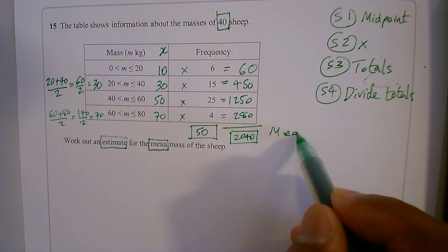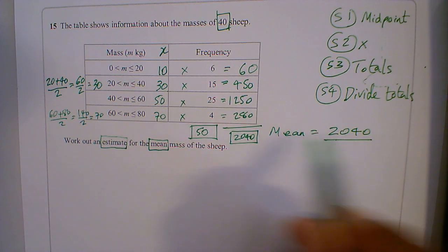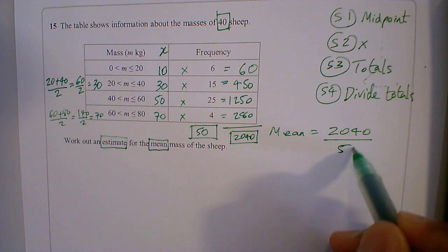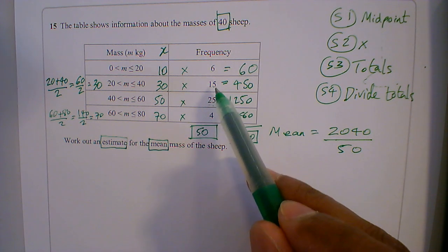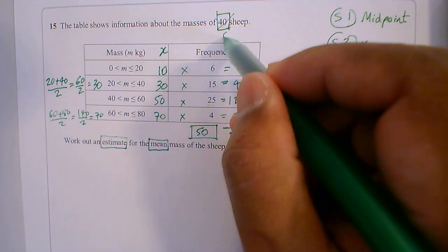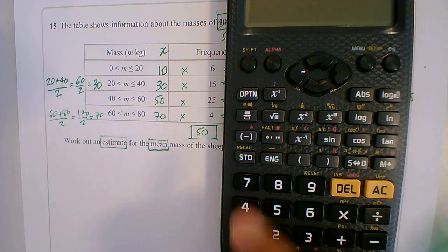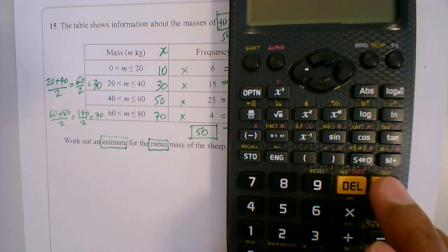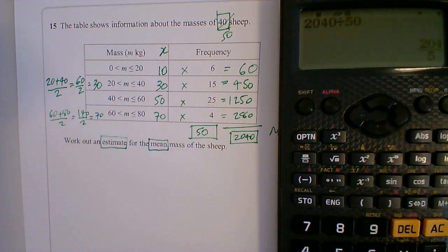So my mean equals 2040 divided by 50. Even if I do this mentally, 25 plus 15 is 40, plus 6, 46 plus 4 is 50. So I think this is a typo, this should be 50. So I've got the mean, 2040 divided by 50, gives me 40.8.